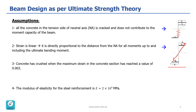The third assumption is that concrete has crushed when the maximum strain in the concrete section has reached the value of 0.003. So we are basically talking about this strain. The modulus of elasticity of the steel reinforcement is 2 times 10 to the power of 5 MPa.